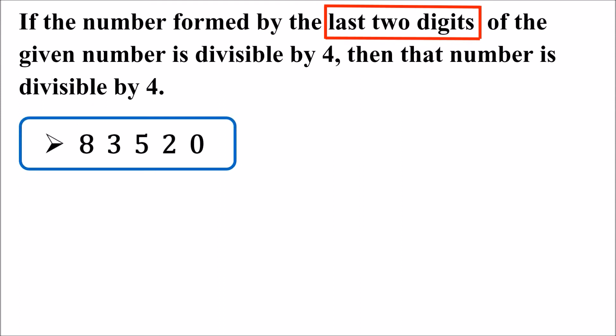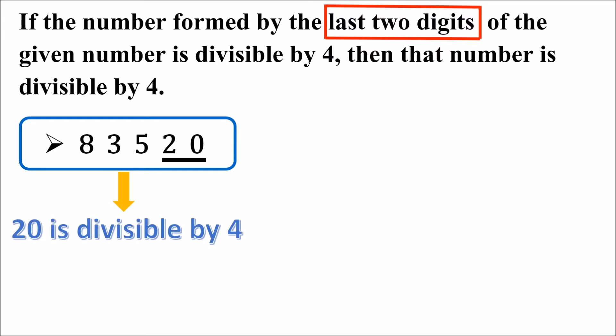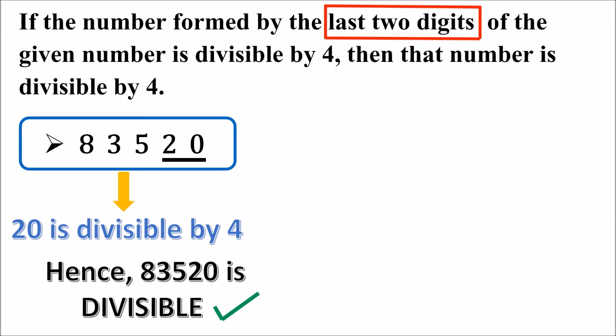Is this number divisible by 4? To know whether this number is divisible by 4 or not, we need to look at the last 2 digits of this number. The last 2 digits are 2 and 0, that is 20. So the number formed by the last 2 digits is 20. Is 20 divisible by 4? Yes, 20 is divisible by 4 because 5 times 4 is 20. If the last 2 digits of a number are divisible by 4, then the given number will be divisible by 4. Therefore, this number is divisible by 4.